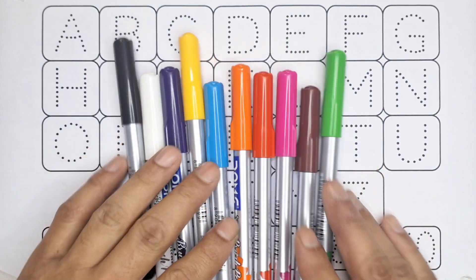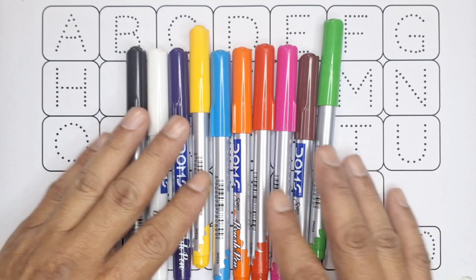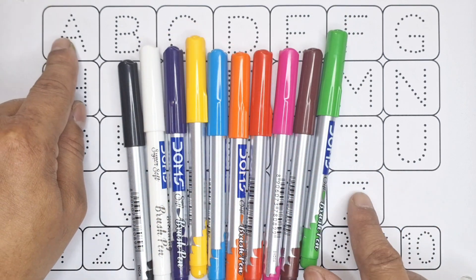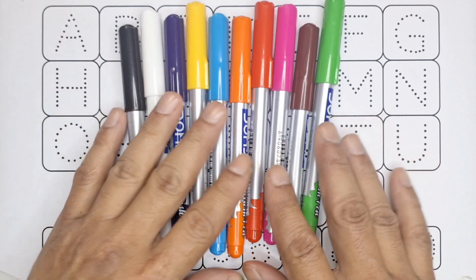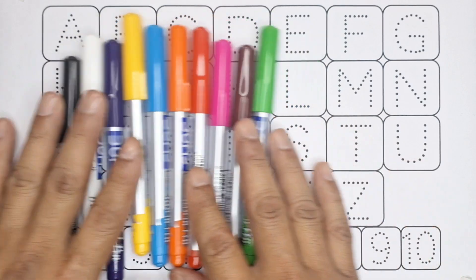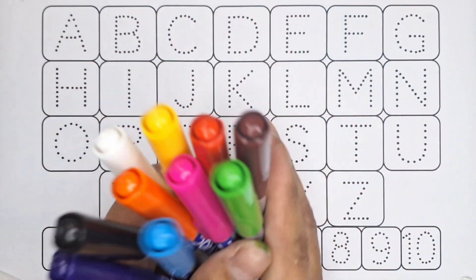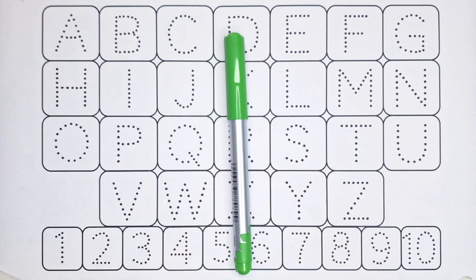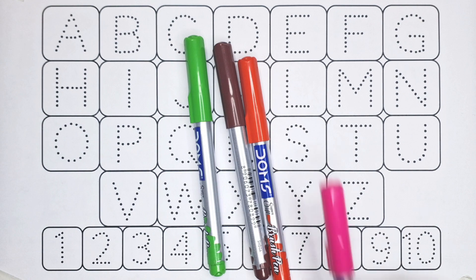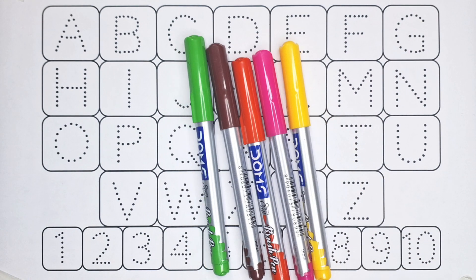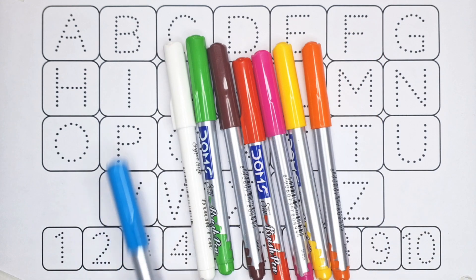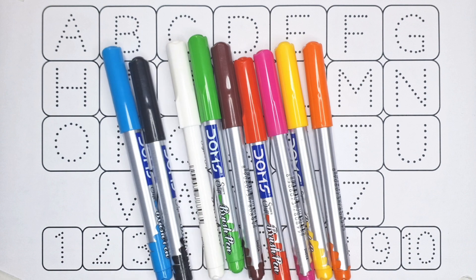Hello kids, welcome to my channel. Today in this video we are going to learn the English alphabet letters from A to Z and counting numbers from 1 to 10. So these are our colors. Let's learn the names of colors: green color, brown color, red color, pink color, yellow color, orange color, white color, blue color, black color, purple color.